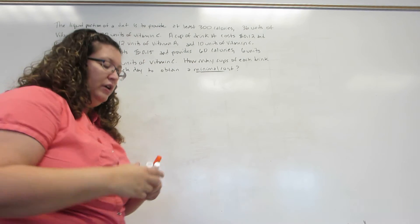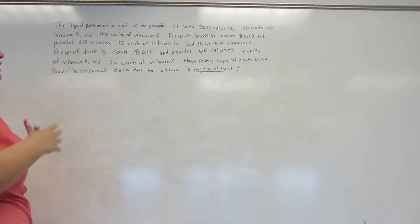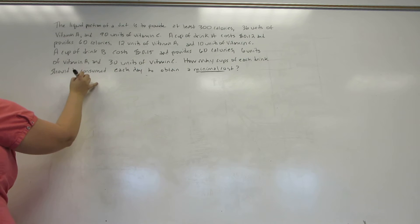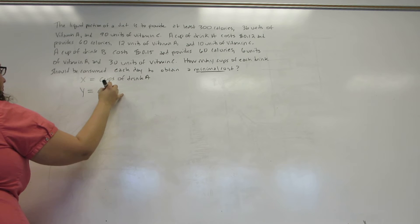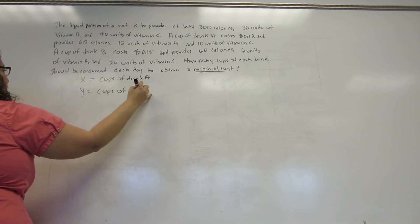When I'm trying to formulate this problem, I don't actually read through the whole thing at first. I skip straight to the last sentence that says how many cups of each drink should be consumed each day to obtain a minimal cost. This tells me immediately what my variables should represent. I have two drinks: X should be cups of drink A, and Y should be cups of drink B.